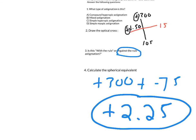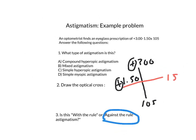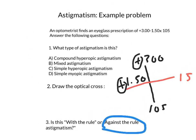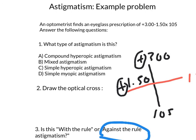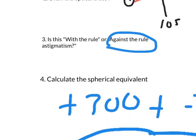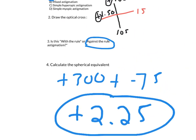This is equivalent to placing the circle of least confusion on the retina. So to summarize: this prescription is compound hyperopic astigmatism, as shown on the optical cross. It is against the rule, and plus 2.25 is the spherical equivalent. Hopefully this video helps.